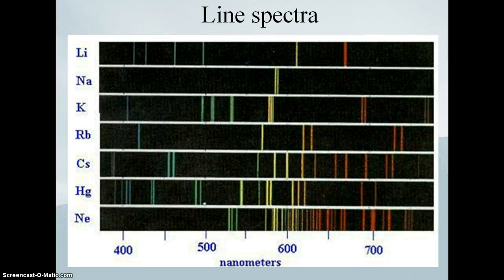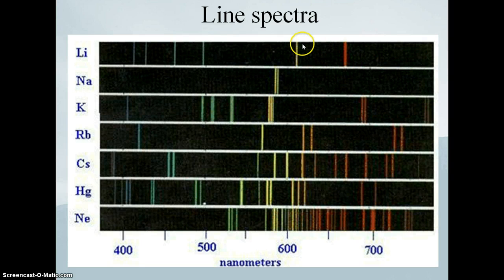Lithium has five energy levels that are spaced out at certain differences from various electron levels. So the electrons can go from a level five state down to a level three state, and that might correspond to a color of red; or from a level two state down to a level one state, that might correspond to yellow.